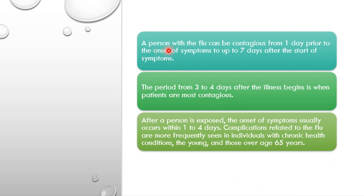Contagious diseases such as flu, cold, or streptococcal throat infection spread from person to person in several ways. One way is direct physical contact like touching or kissing a person who has the infection. Another way is when an infectious microbe travels through the air after someone nearby coughs or sneezes — the droplets from their cough or breathing can be infectious to another person. A person with flu can be contagious from one day prior to the onset of symptoms up to seven days after the start of symptoms.